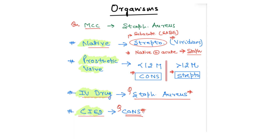For prosthetic valve endocarditis, duration matters. If less than 12 months, the causative organism is CoNS — coagulase-negative Staph, i.e., Staph epidermidis. If greater than 12 months, it behaves like native valve endocarditis. Special mention: in IV drug abusers, the tricuspid valve is affected and the most common organism is Staph aureus. For cardiac implantable electronic devices (CIEDs), the answer is CoNS — Staph epidermidis.